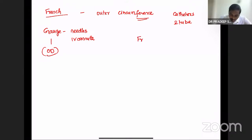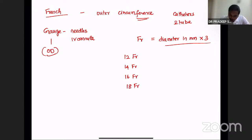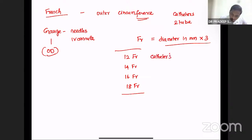French equals the diameter in millimeters multiplied by 3 — so 3 times the diameter in millimeter equals French. The commonly used French codes are 12, 14, 16, and 18 French, used for catheters or Ryle's tube. 12 French is white, 14 French is green, 16 French is orange, and 18 French is red.